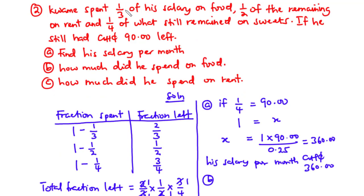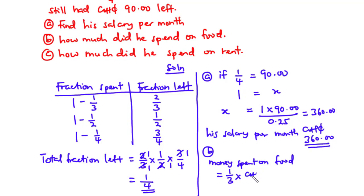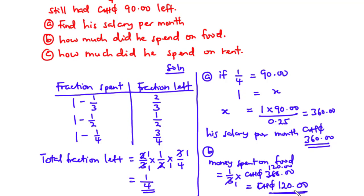For part b, how much did he spend on food? From the question, Kwame spent one third of his salary on food. So money spent on food equals one third times the total amount of 360 Ghana cedis. Three goes into 360 twelve times, so that is 120 Ghana cedis. The amount he spent on food is 120 Ghana cedis.